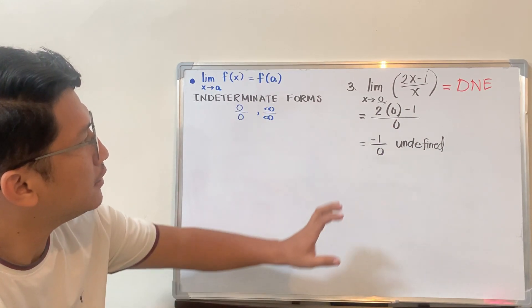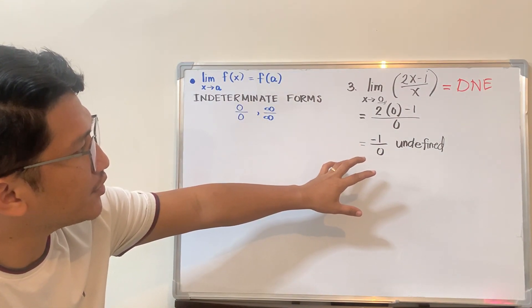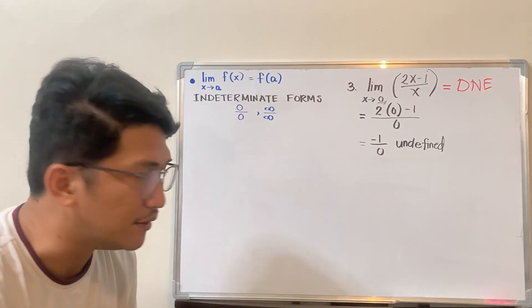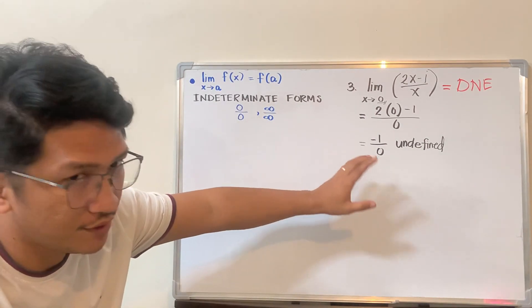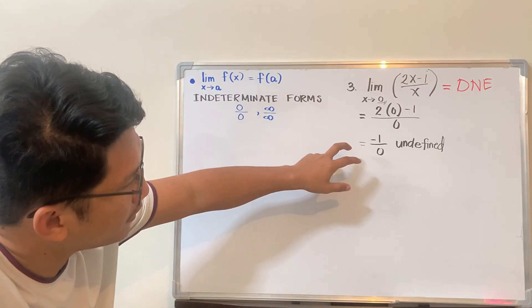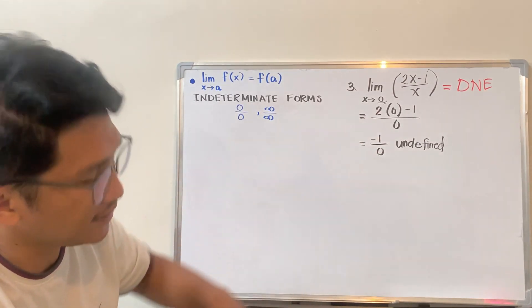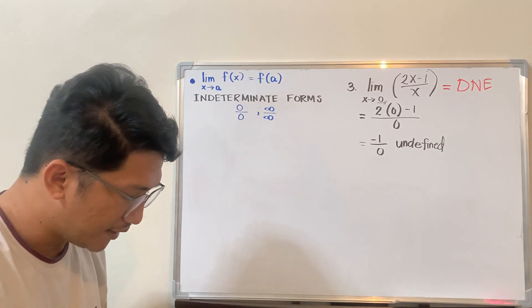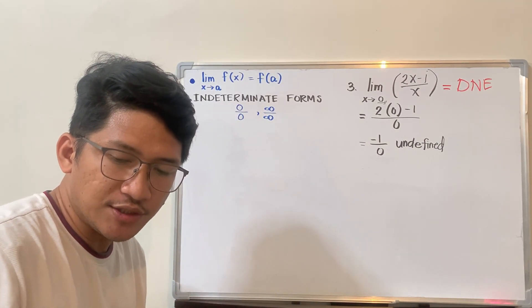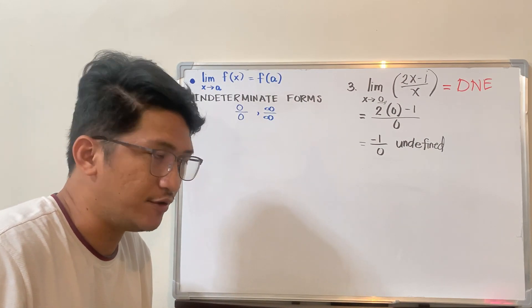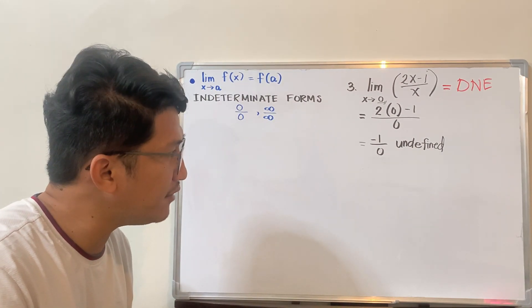Before I proceed, I want to clarify what 'does not exist' means when it comes to an undefined result. So every time we get undefined after substituting, the conclusion is: the limit does not exist. Why is that so?